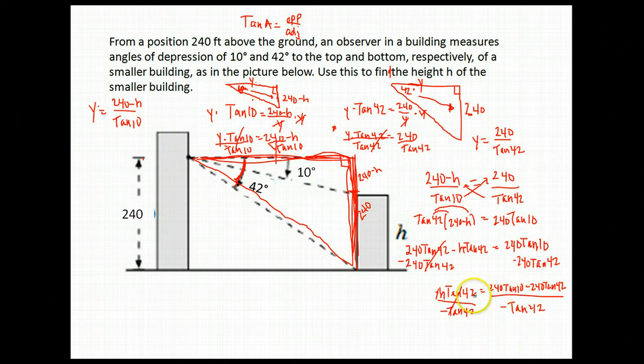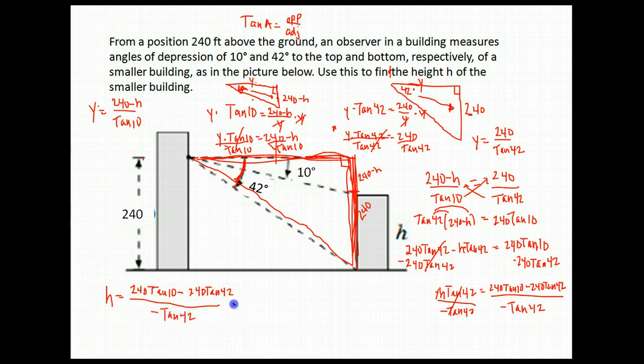All I need is a calculator to work all of that out. H is 240 times the tangent of 10 minus 240 times the tangent of 42, all divided by negative tangent 42. Calculate those carefully if you need to. When you do, you should get the height is 193 feet. Pretty long process there, but we were able to do it.